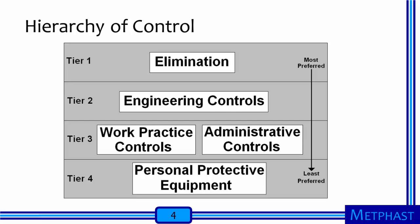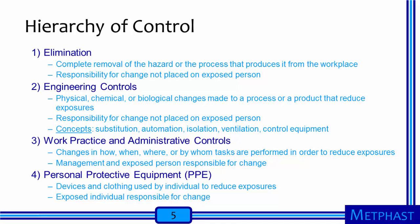The hierarchy of control, as I define it, has four tiers. The top tier, which is most preferred with all else being equal, is elimination of the workplace hazard. Tier 2 is engineering controls. Tier 3 includes both work practice controls and administrative controls. Tier 4, the least preferred method for controlling exposure with all else being equal, is personal protective equipment.